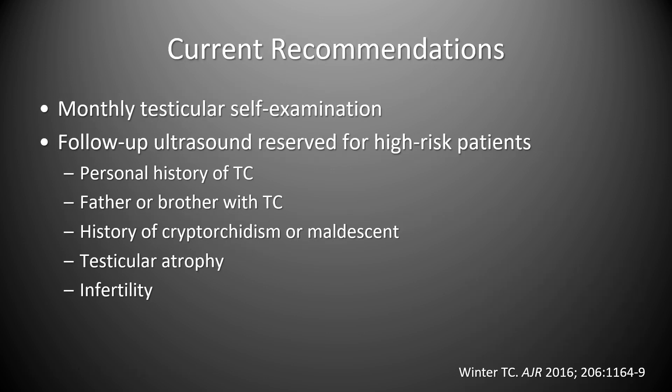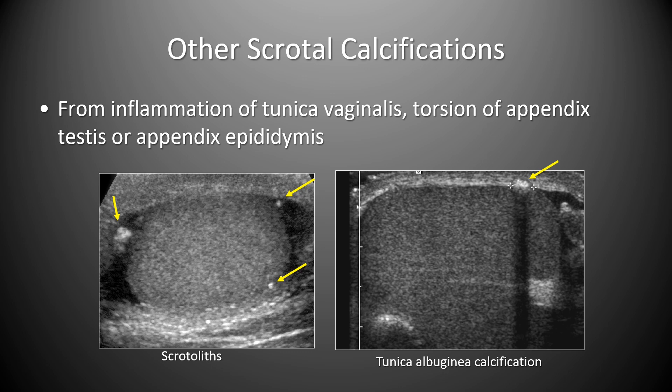Testicular microlithiasis indicates a pre-malignant change only in patients with additional risk factors for testicular carcinoma, with a worst-case estimate of 1 in 100 if no risk factors are present. Current recommendations include monthly testicular self-examination, with follow-up ultrasound reserved for high-risk patients — those with personal or family history of testicular carcinoma, cryptorchidism, atrophy, or infertility. Other intrascrotal calcifications include scrotalith from appendage torsion and non-mobile tunica albuginea calcifications.